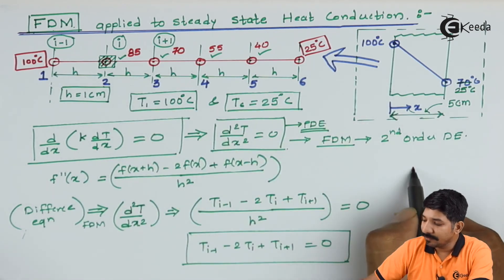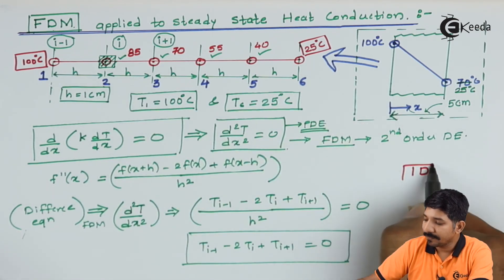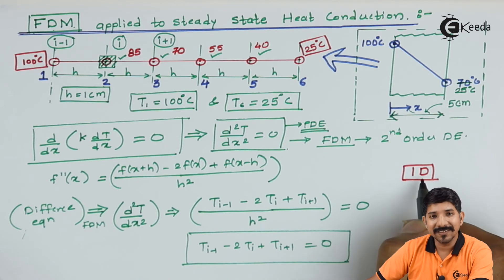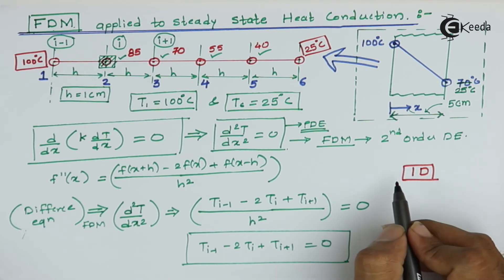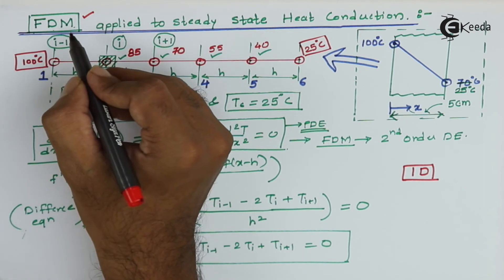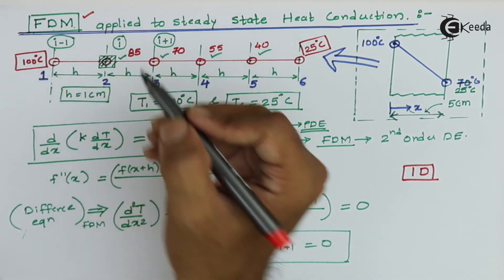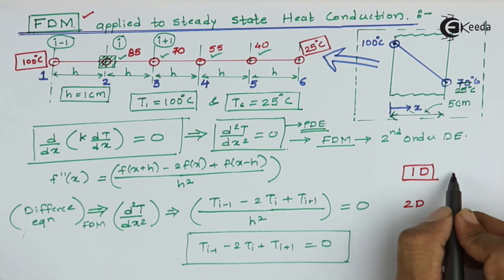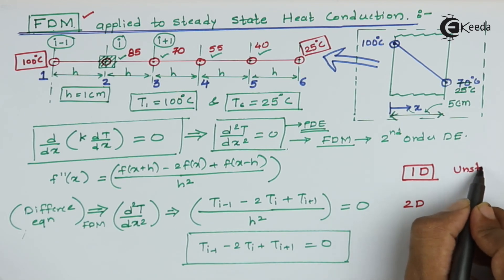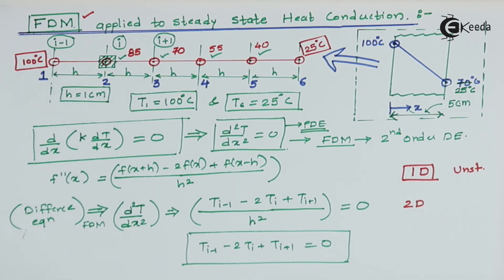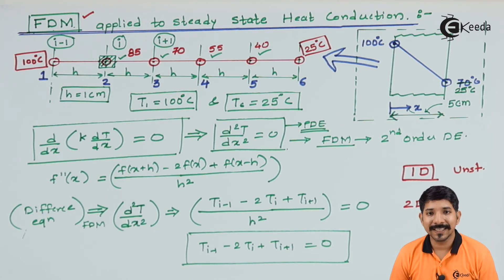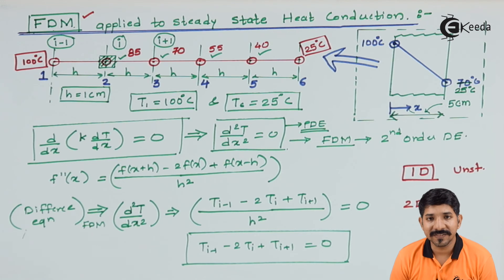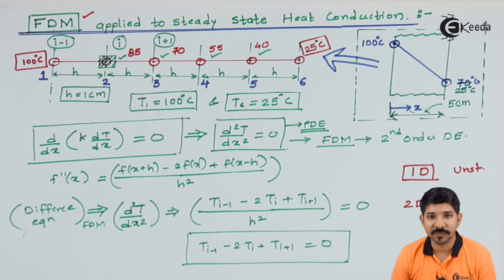This was a one-dimensional problem solved to help understand the FDM method. The FDM method can also be applied to two-dimensional problems or one-dimensional unsteady state problems. In this topic we have understood the FDM method and applied it to find the temperature distribution in a given problem.